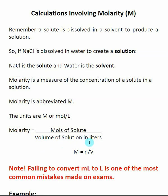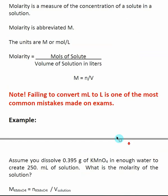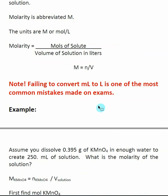The volume must be in liters, and this is tricky because in the lab, graduated cylinders are in milliliters. So converting milliliters to liters and vice versa is a very common calculation. The equation is M = n/V — molarity equals moles of solute divided by volume of solution in liters. As a chemistry teacher, probably the most common mistake I see on exams is the failure to convert milliliters to liters.